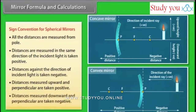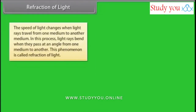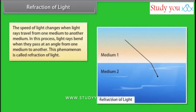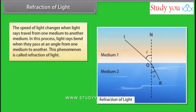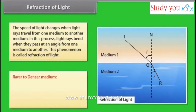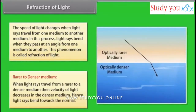Refraction of light: The speed of light changes when light rays travel from one medium to another. In this process, light rays bend when they pass at an angle from one medium to another — this phenomenon is called refraction of light. When light rays travel from a rarer to a denser medium, the velocity of light decreases in the denser medium; hence, light rays bend towards the normal.